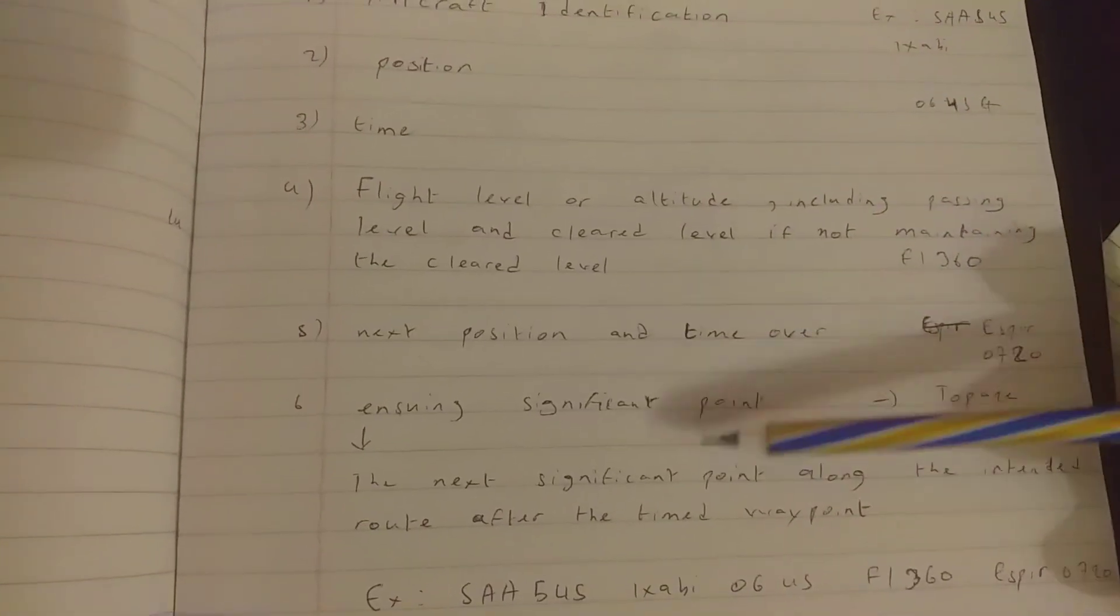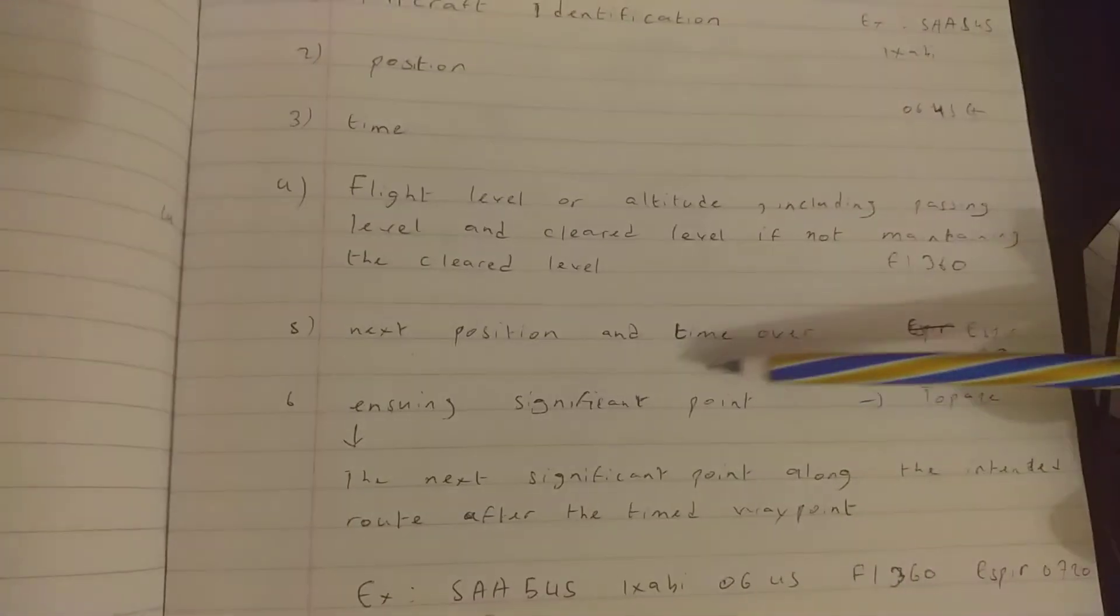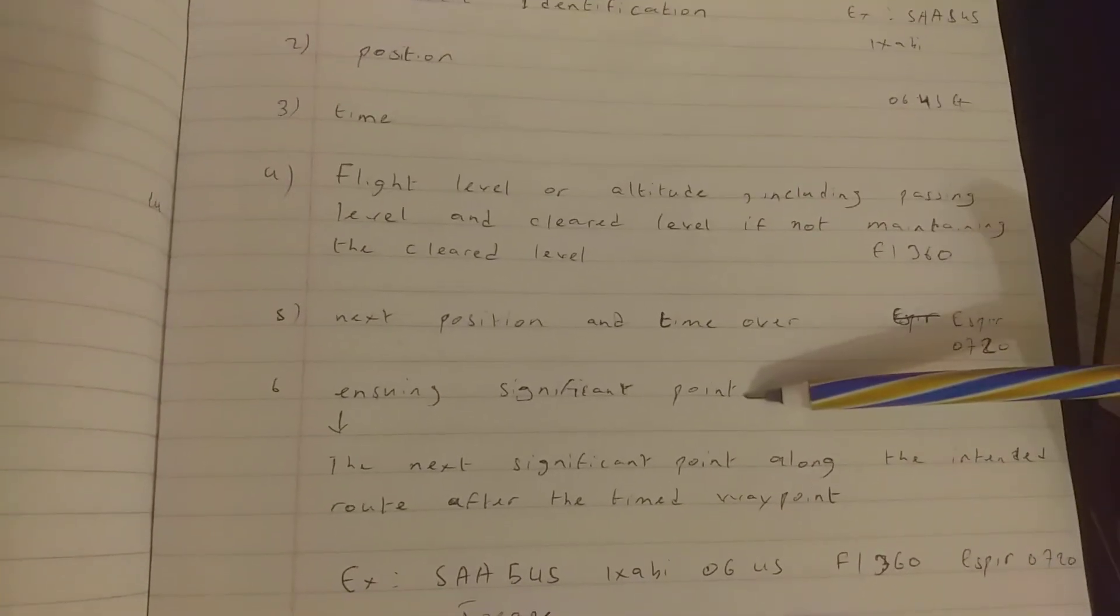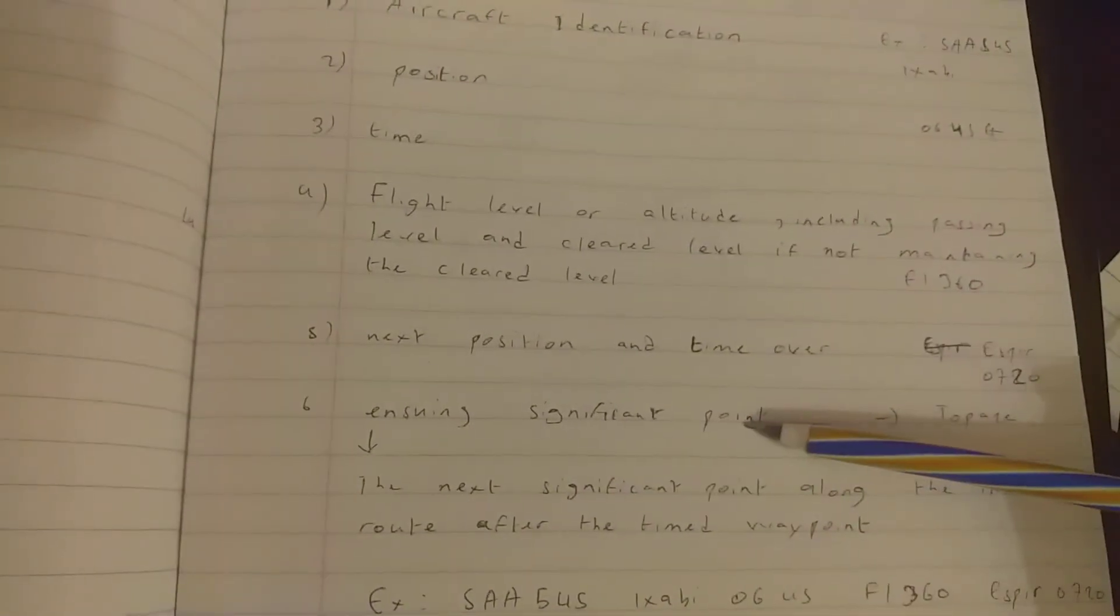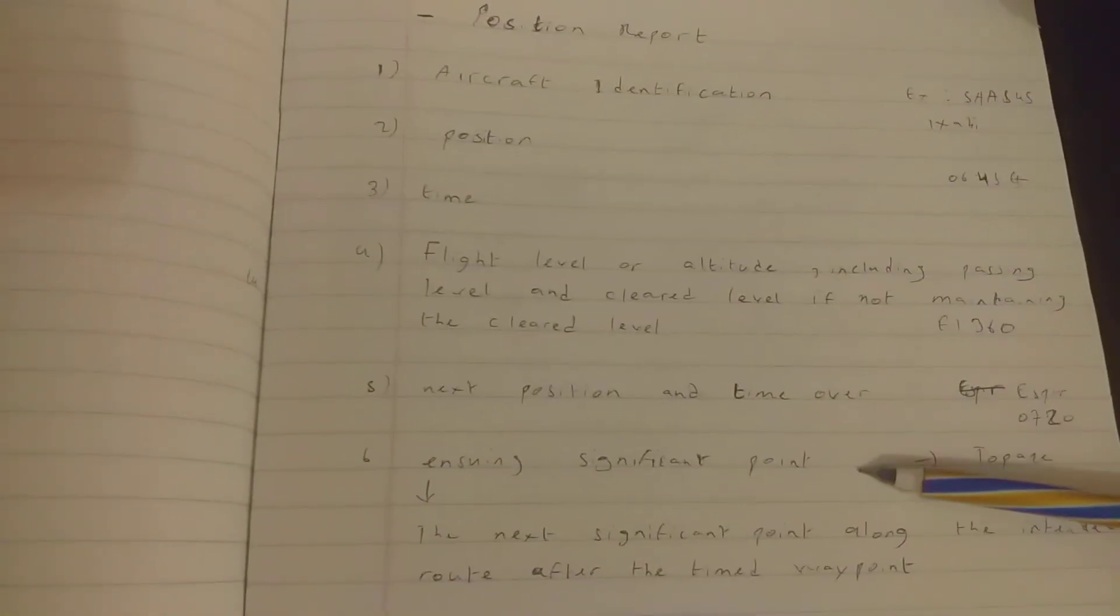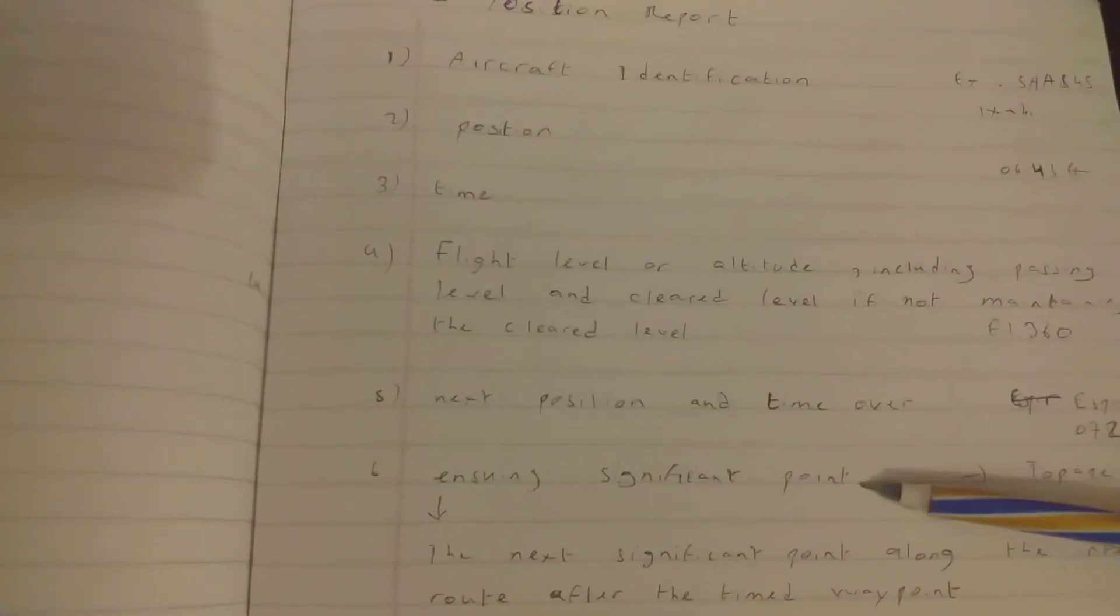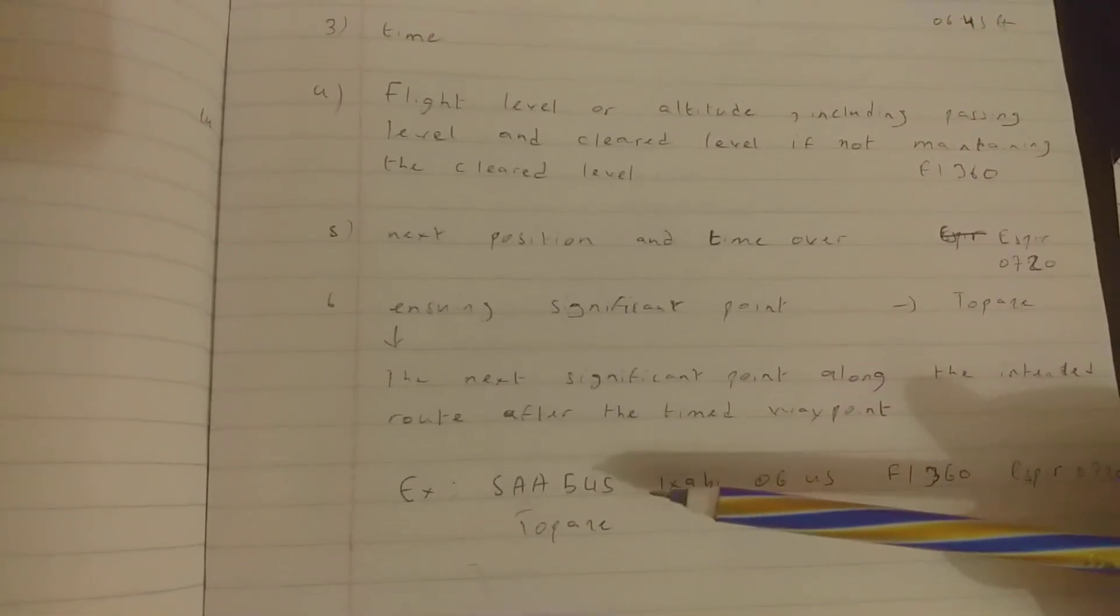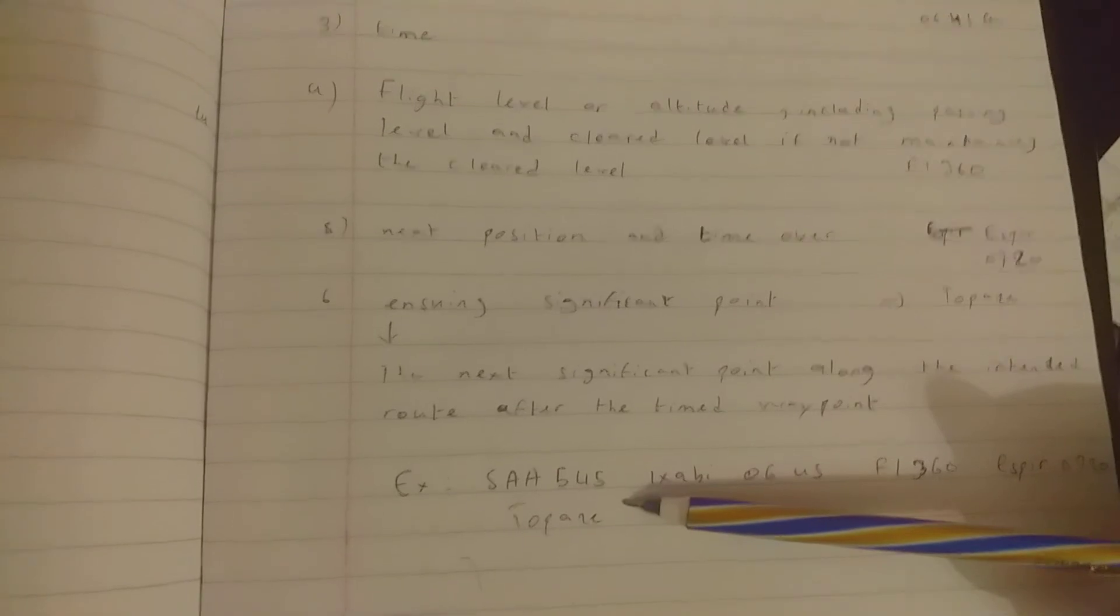The ensuing significant point is that in reality they don't really use it, but it is important. So in reality they don't really use it, but if we take an example it should be like this: Springbok 545, Xabi 0545, maintaining flight level 360, SP 0720, to pass next position, to pass.